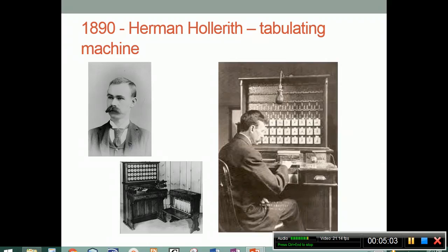In 1890, Herman Hollerith created a tabulating machine. He worked for the U.S. Census Bureau and realized they wouldn't be able to finish tabulating the results of the 1890 census before the next census was taken. So he created an electro-mechanical counting machine that used punch cards — think back to that loom. Because of the success of this single-purpose machine, he created a company called the International Business Machines Corporation, which you might know as IBM.